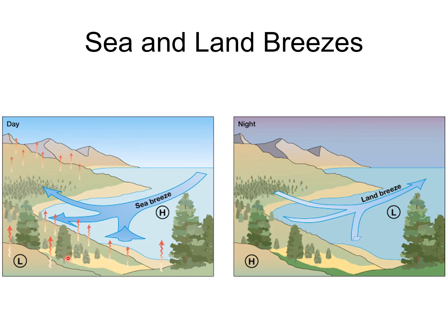During the daytime, the land heats up much more quickly and extensively than does the water. Water can mix and takes a lot of energy to raise its temperature — it has a high specific heat capacity. So the land heats up, the air above it heats up through conduction, convection, and re-radiation, and the air rises. It splits, comes back at higher elevation across the water, and sinks down to complete that convection cell. This breeze gets strongest when the difference in temperature between the land and the water is the greatest — typically mid-afternoon.